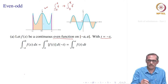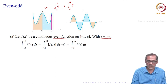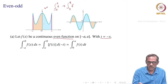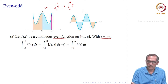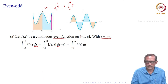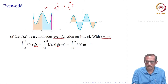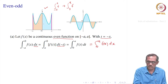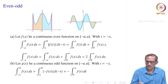We consider the first part, from −a to 0, using evenness. For the integral from −a to 0 of f(x)dx, we write t = −x. So f(x) becomes f(−t), and d(−t) gives a minus sign. When x = −a, t = a; when x = 0, t = 0. So the limits go from a to 0. With dx = −dt, the integral from a to 0 of f(−t)(−dt) becomes the integral from 0 to a of f(t)dt, which equals ∫₀ᵃ f(x)dx. The variable does not matter in a definite integral.